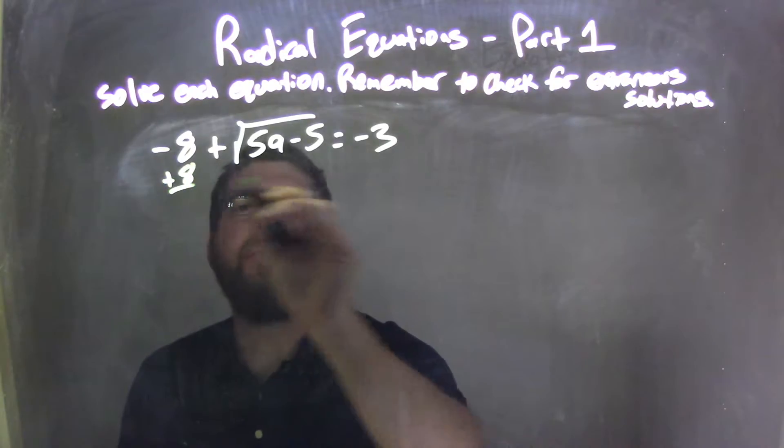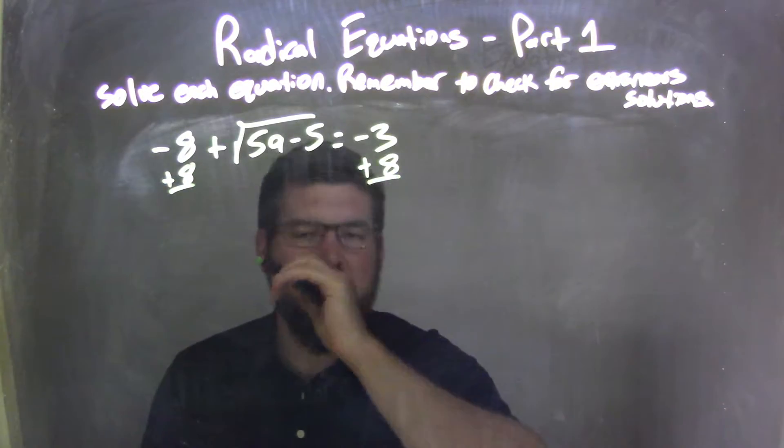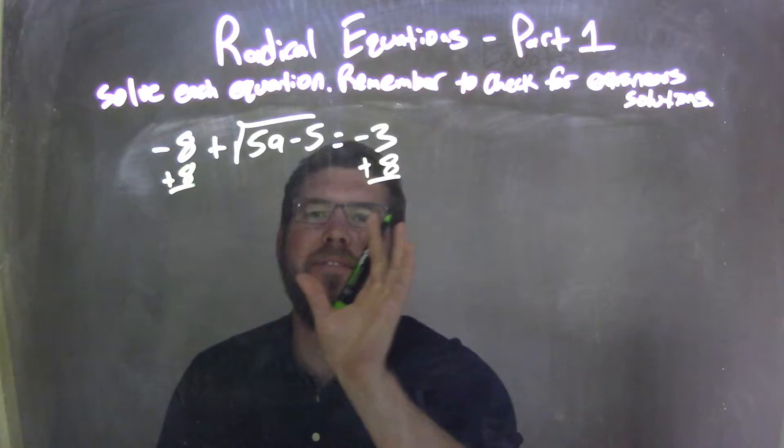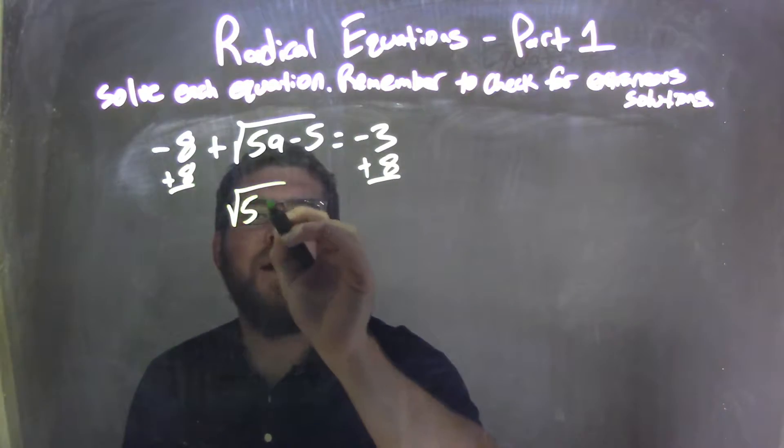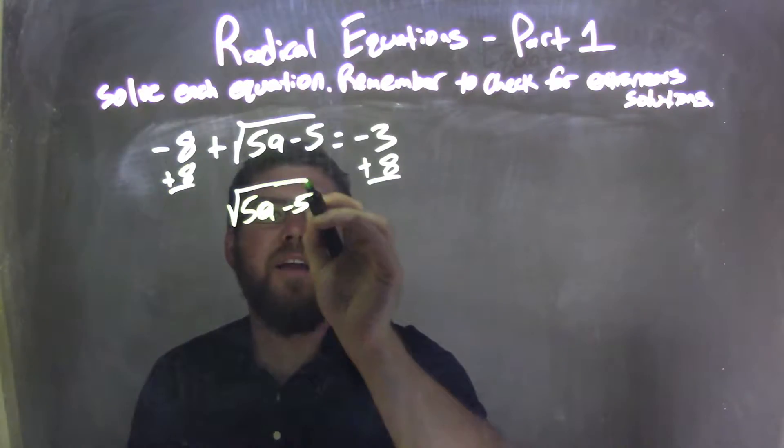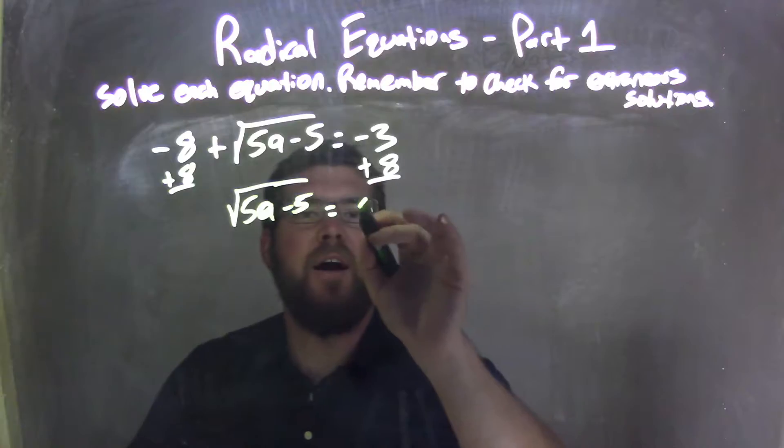My first step is adding 8 to both sides. I can only square both sides if the square root is isolated. I'm left with the square root of 5a minus 5 equals negative 3 plus 8, which is 5.